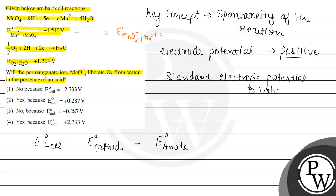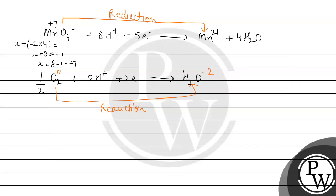So reduction potential jo humare paas aayega, wo positive mein aayega, 1.510 volt. And here we can see this is the correct one. Oxygen se H2O mein reduction potential hi given hai humare. And it is the standard reduction potential. So by this we can write the values for standard reduction potential. MnO4- to Mn2+ is given as 1.510 volt, and O2 to H2O is 1.223 volt.